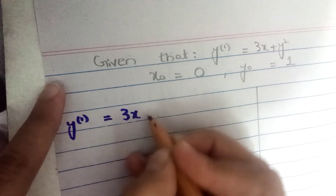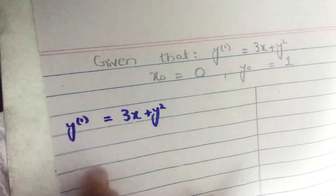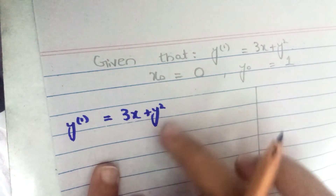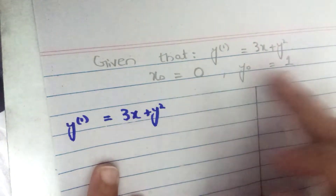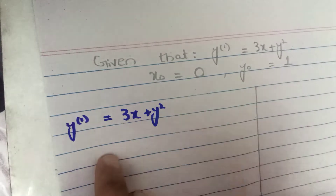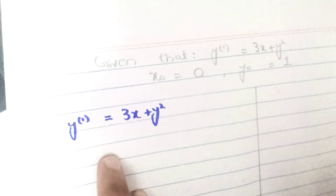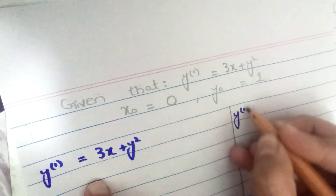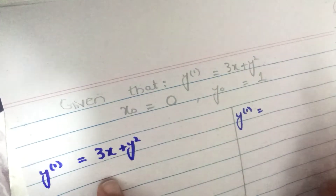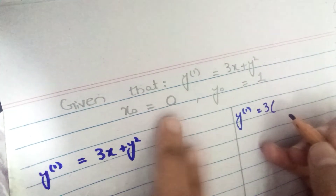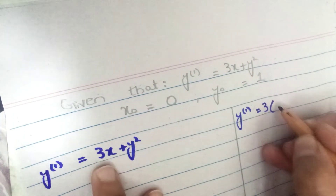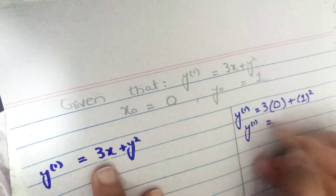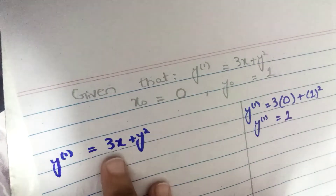We already have the first derivative given, which is 3x plus y squared. What we have to do now is find the value of y1 by substituting x naught and y naught into this expression. So y1 equals 3 times 0 plus 1 squared, which gives y1 equals 1. This is our first non-zero value.